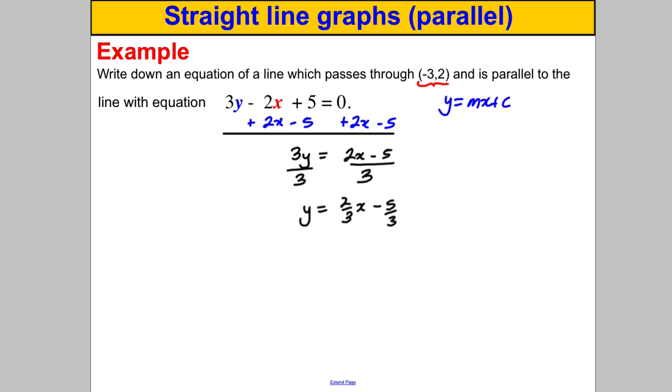Now that rearrangement has only told us about this line here, but it's told us that the gradient is 2 thirds, so that's the gradient we want for our new line. So our new line is Y equals MX plus C, and we know now that M is supposed to be 2 thirds, and a point on the line is (-3,2).